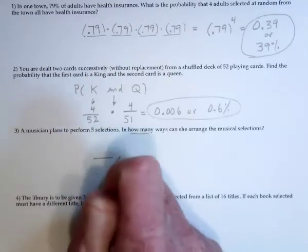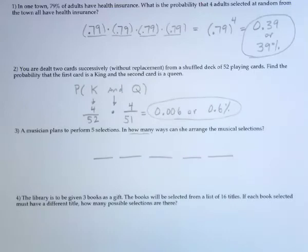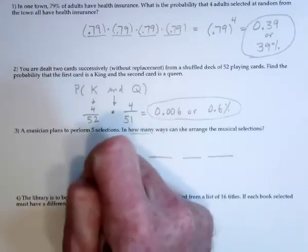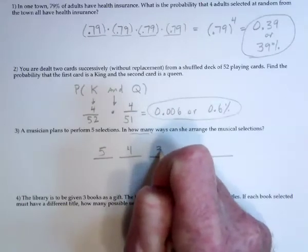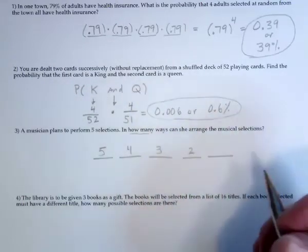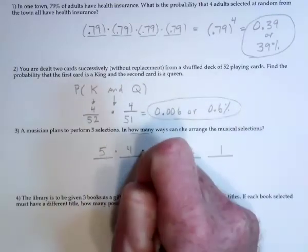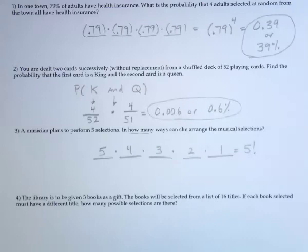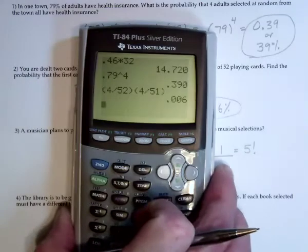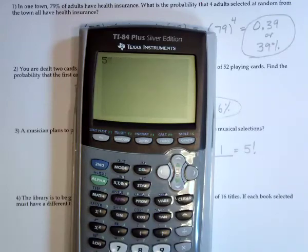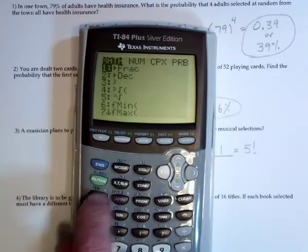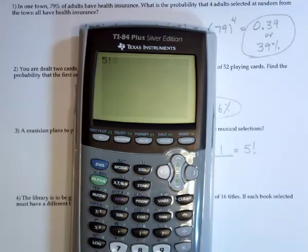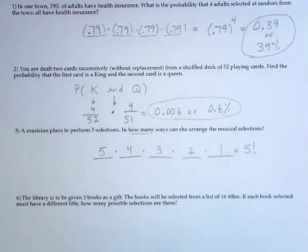So what you could do is say there's five songs, and when the person goes to choose the first song, there's five choices, then four choices left, then three choices, then two choices, and by the time they get to the end there's only one choice. You can multiply these yourself, or this is five factorial. So five factorial is 120 different possibilities.